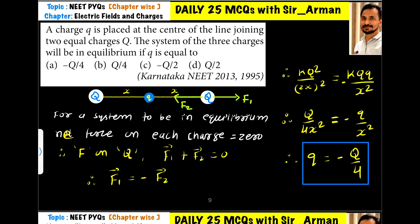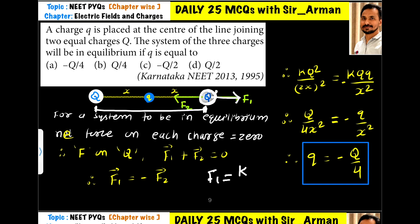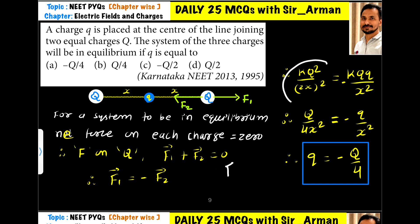To find the value of q, find the force on any of the other two charges instead. Let us find the net force acting on one of the capital Q charges. Since the system is in equilibrium, the net force on it is zero. The two Q charges are the same sign, so they repel each other. Force F1 is given by k·Q² divided by (2x)², which equals k·Q² divided by 4x².